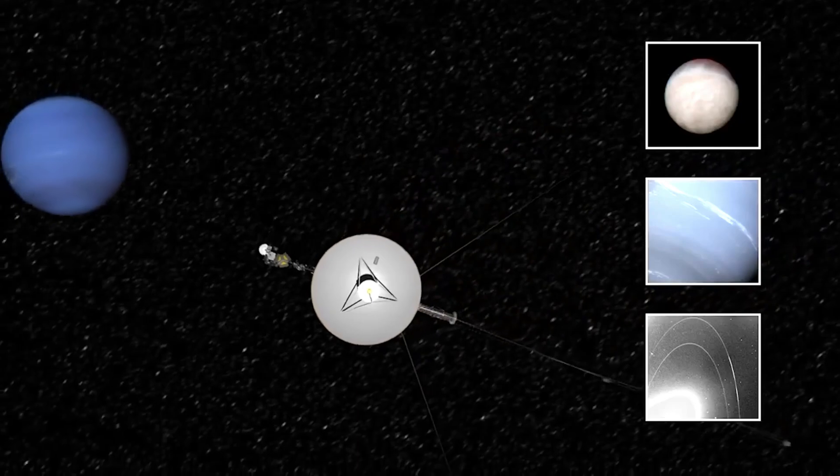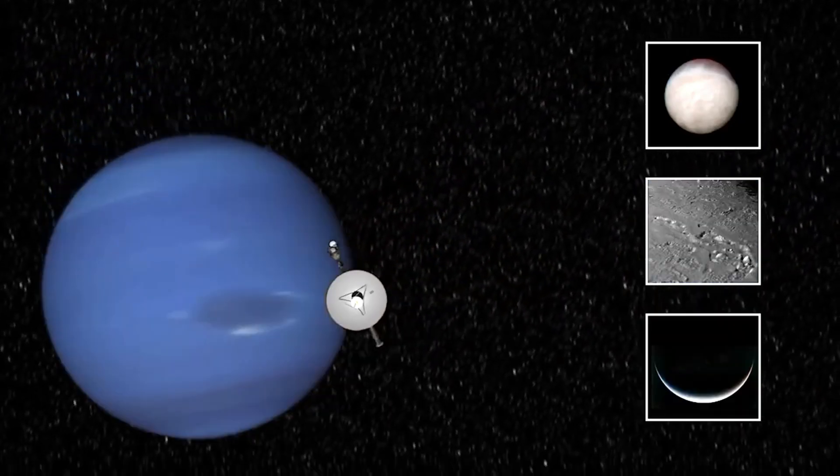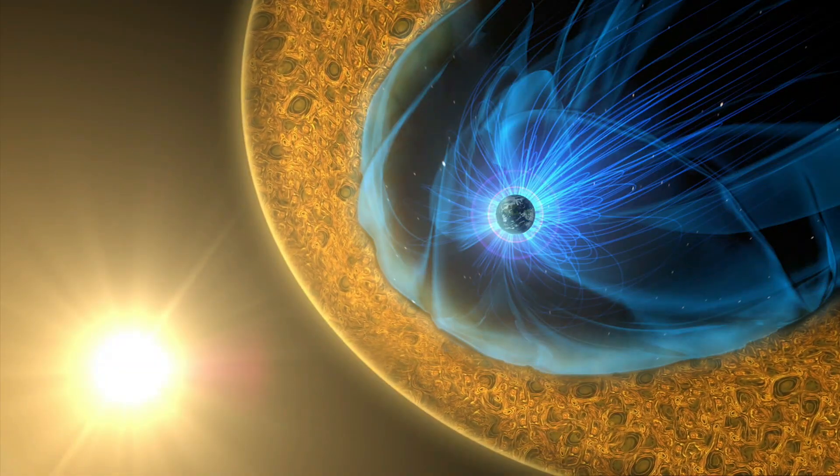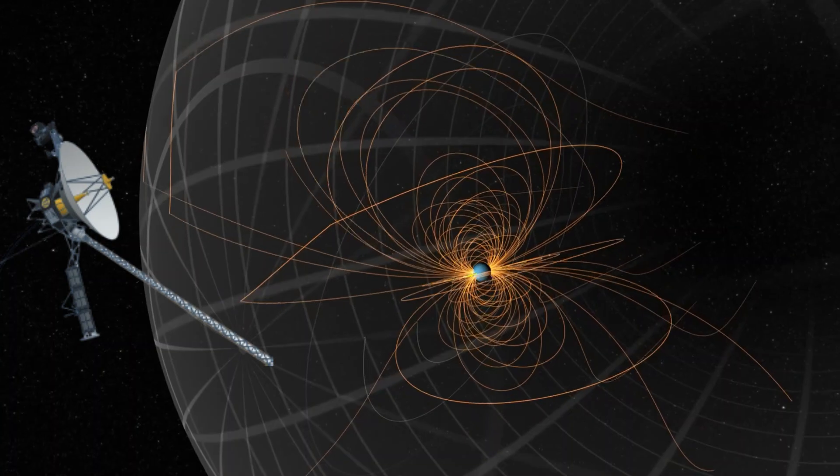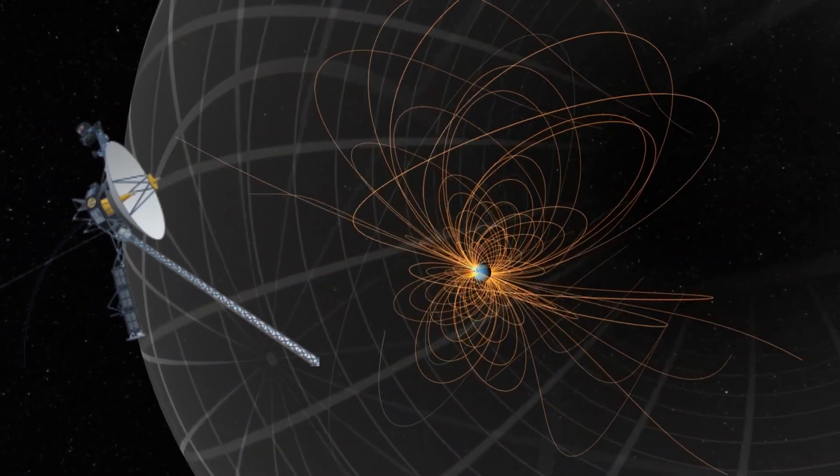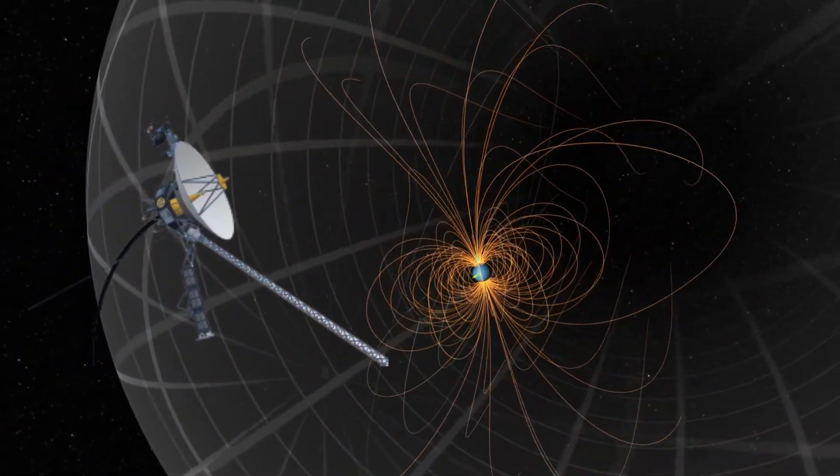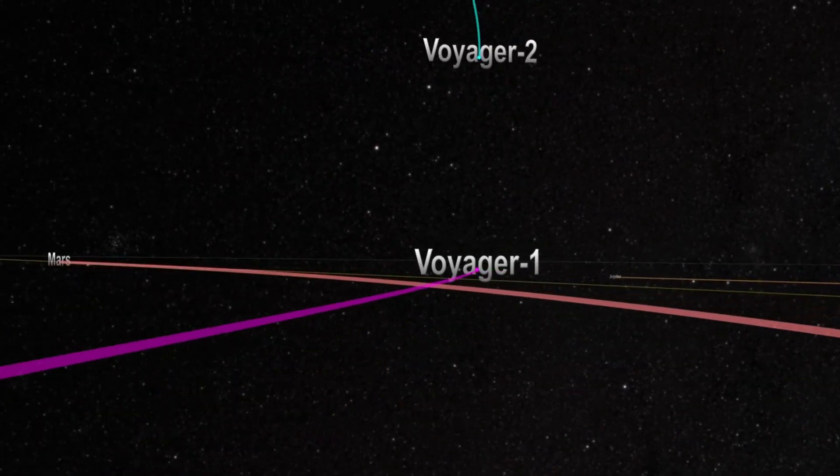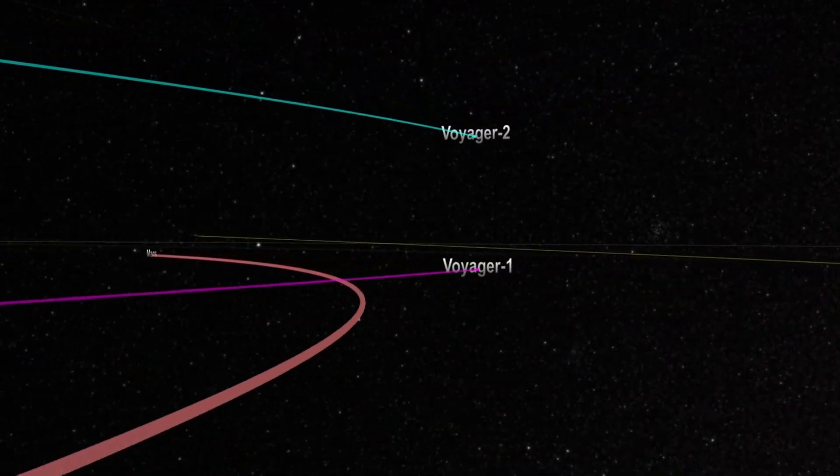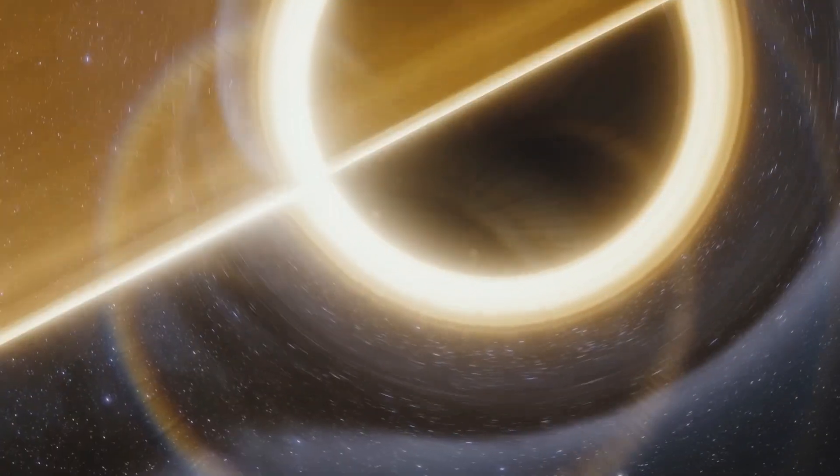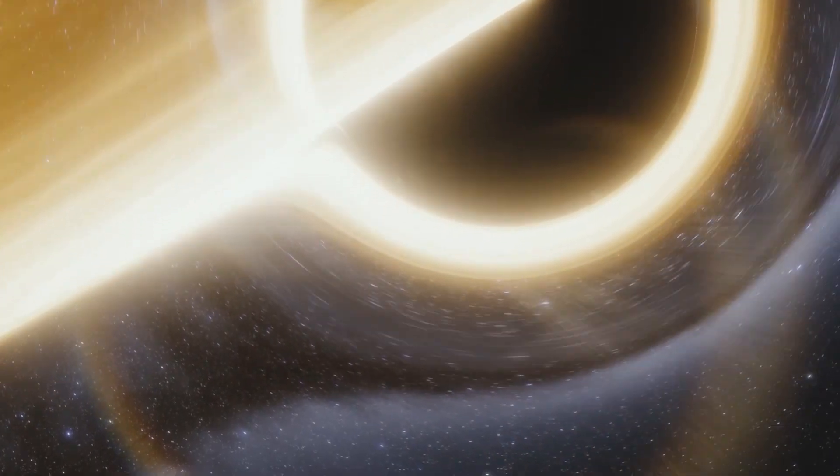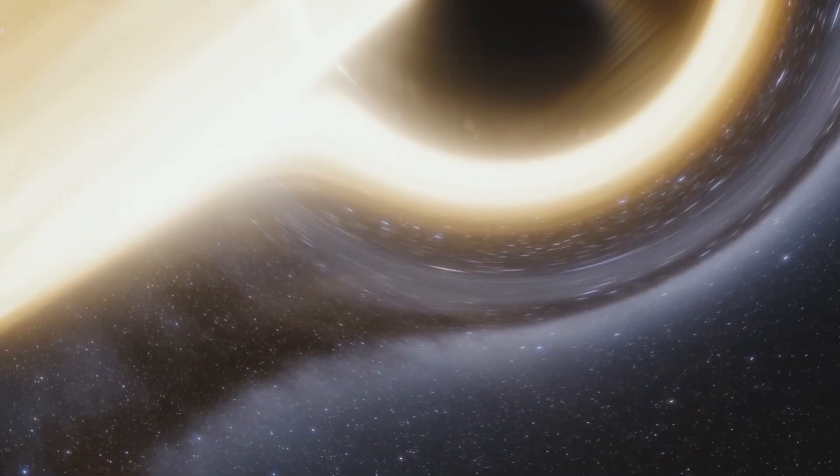Voyager's findings, however, have revealed something far more complex. Instead of the expected gradual decline in solar wind, Voyager has uncovered bizarre magnetic and plasma fluctuations that defy current models. These unexpected shifts hint at forces we can't yet explain, forces that could have profound implications, not just for space exploration, but for Earth's safety as well.